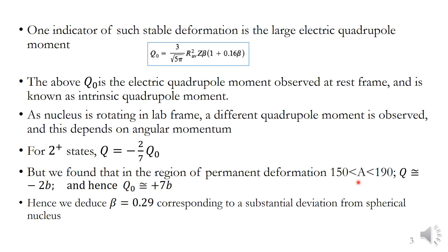In the region of permanent deformation — that is the atomic mass region of 150 to 190 — the electric quadrupole moment Q is observed as minus 2b. Using the equation Q equals minus (2/7) Q0, we can calculate Q0 as plus 7b. Since Q0 is plus 7b, we can deduce the deformation parameter β, which is obtained as 0.29. A value of 0.29 represents a substantial deviation from the spherical shape of the nucleus.